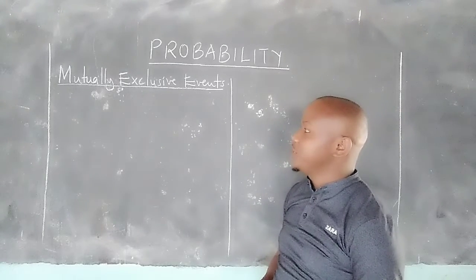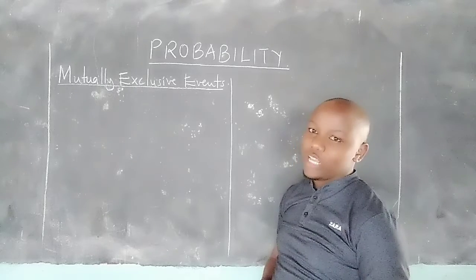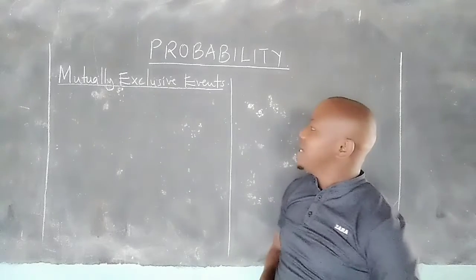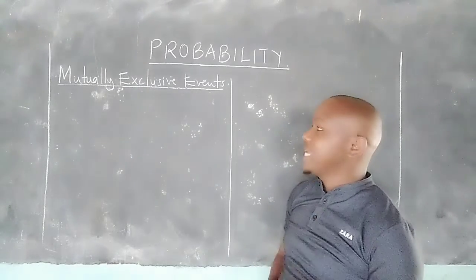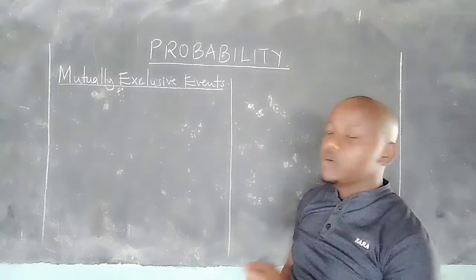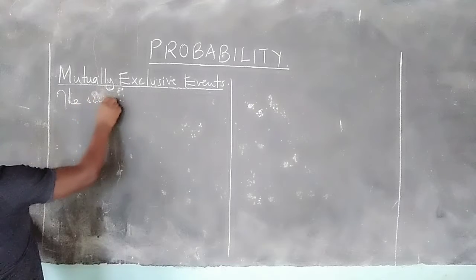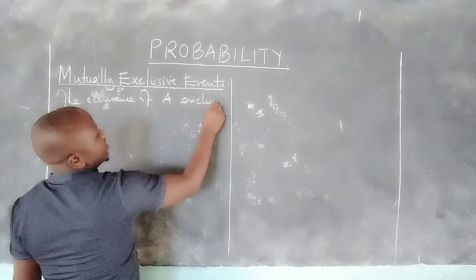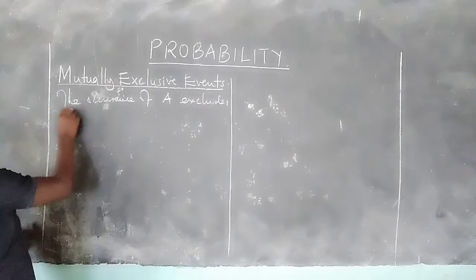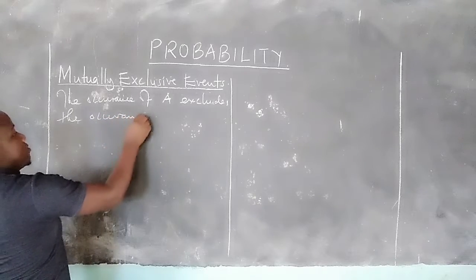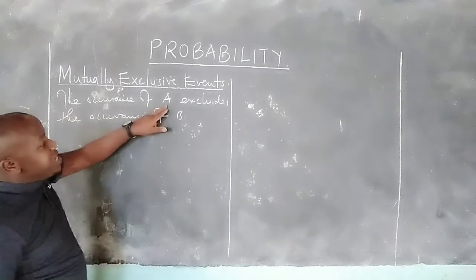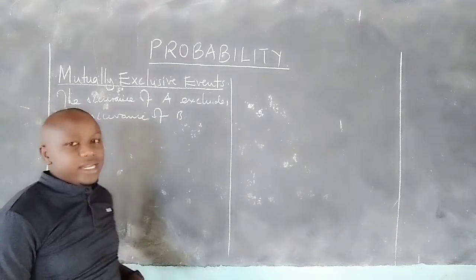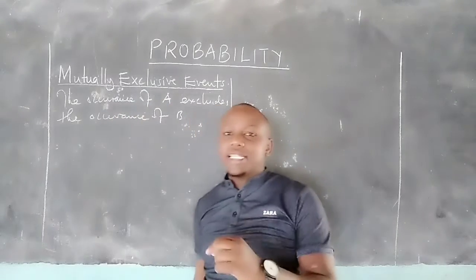In this session, I wanted us to check what we call mutually exclusive events. When we say one event and another are mutually exclusive, we mean that the occurrence of one excludes the occurrence of the other. So if events A and B are mutually exclusive, then the occurrence of one excludes the occurrence of the other.